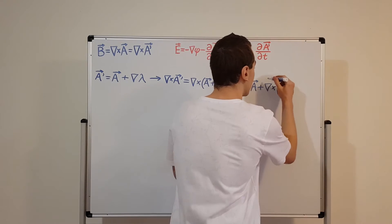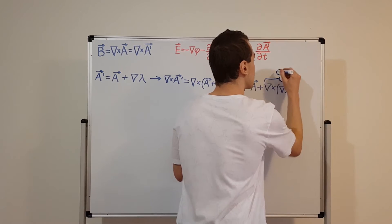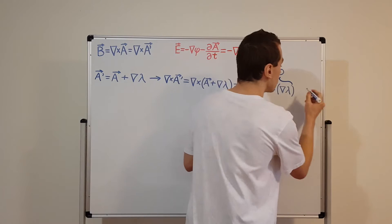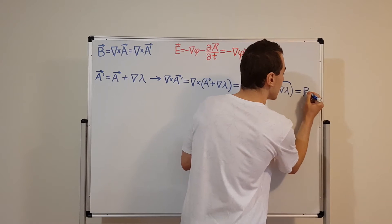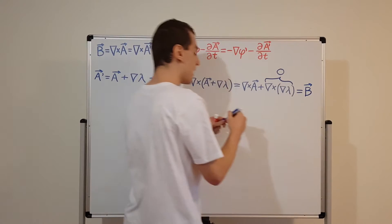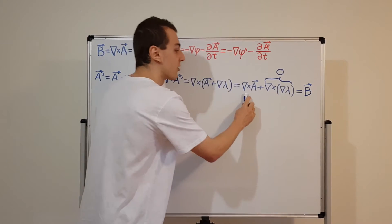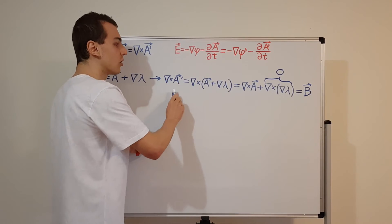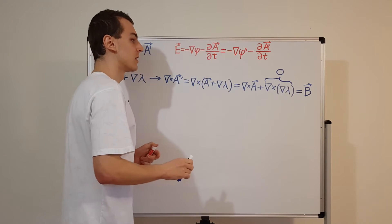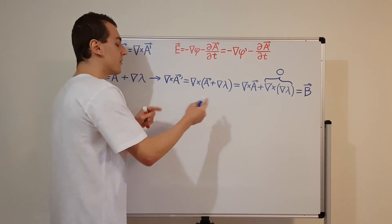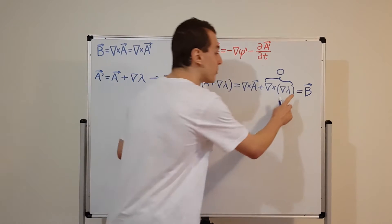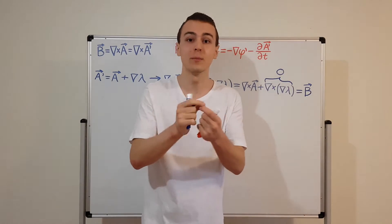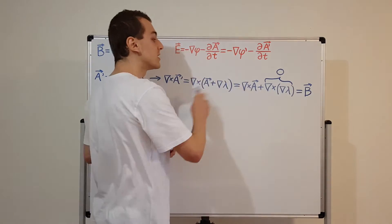Setting the curl of the gradient term to zero, we're just left with the curl of A, which equals the magnetic field by definition. We have shown that the magnetic field can be represented as both the curl of A and the curl of A prime — they give the same result. As long as we can find a scalar field lambda, we are guaranteed to get the same physical measurements of the magnetic field regardless of which A we use.